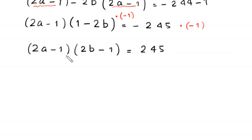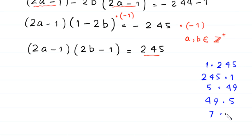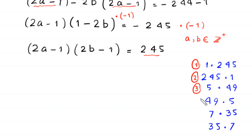We have a product of two factors on the left hand side, and both a and b are positive integers. So 245 can be factorized as 1 times 245, 245 times 1, 5 times 49, 49 times 5, 7 times 35, and 35 times 7. This means we have 6 cases: case 1, case 2, case 3, case 4, case 5, and case 6.